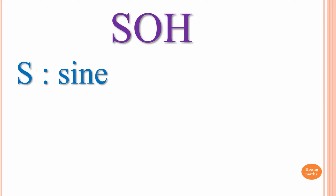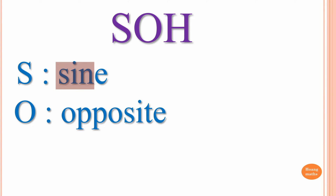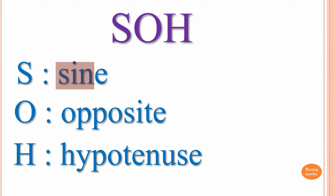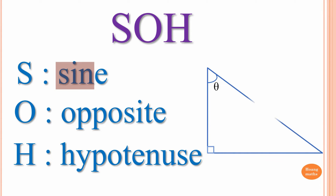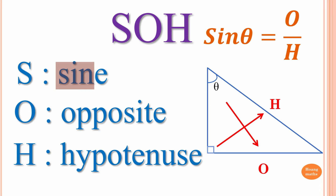S is for Sine, but when we write we write 'sin'. O is for Opposite and H is for Hypotenuse. With this right-angle triangle, angle theta is given. The side opposite the angle is labeled O, and the hypotenuse is the longer side which is always opposite the right angle, so we label it H.